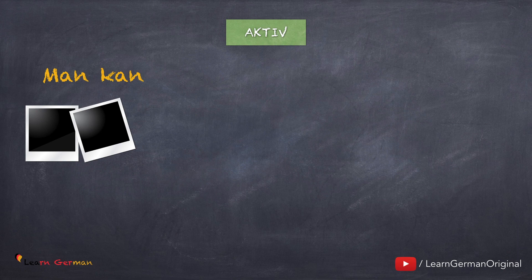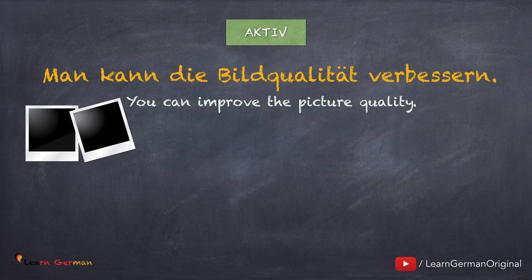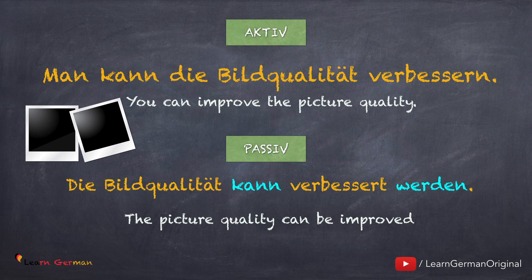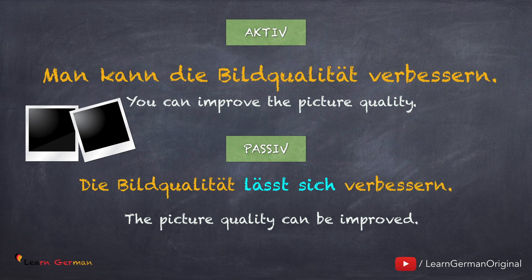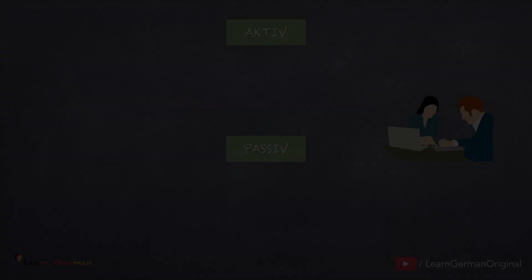Man kann die Bildqualität verbessern. Dieser Satz ist aktiv. Im Passiv sagt man normalerweise: die Bildqualität kann verbessert werden. Sätze mit können kann man auch so bilden: die Bildqualität lässt sich verbessern. In diesem Fall benutzt man sich lassen plus das Verb im Infinitiv am Ende.